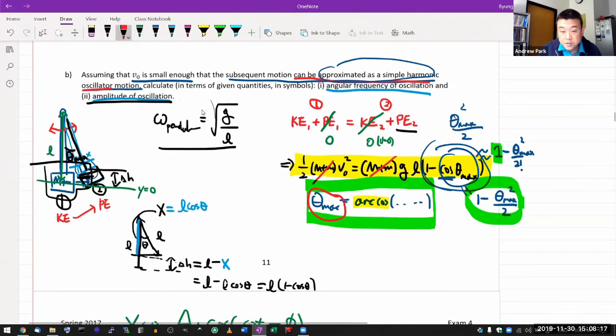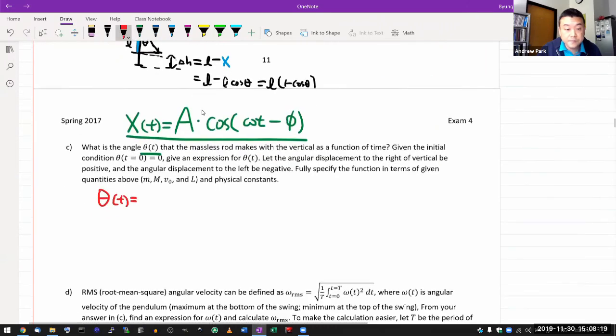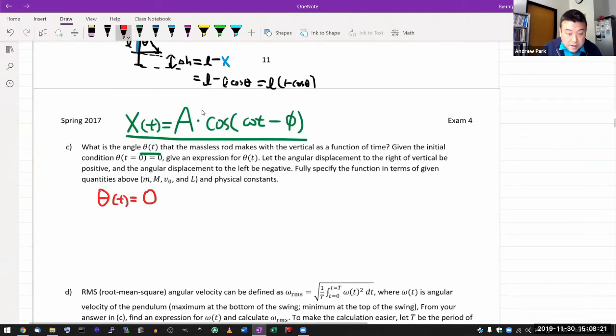So theta max times cosine of omega, angular frequency. I know that from above. So that's going to be square root of g over l times time minus the phase factor. So really the biggest portion of doing this question comes down to figuring out this phase factor. And one way you can do that is you can just plug this in.